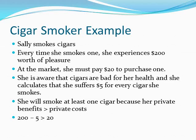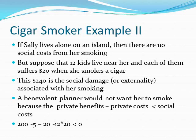When you look at this arithmetic, she will smoke at least one cigar because the private benefits exceed the private costs. She gains $200 from smoking, but she has to pay $5 in health costs and $20 in market costs. So her consumer surplus is $175, which is positive, so she smokes.